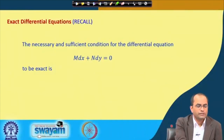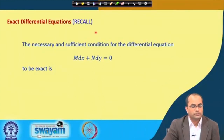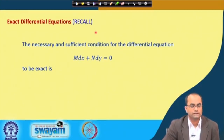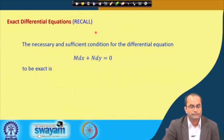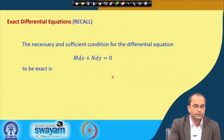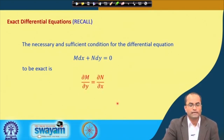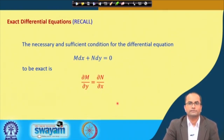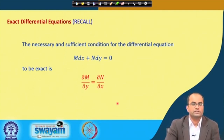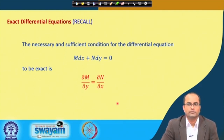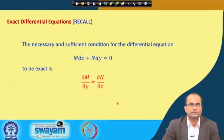Just to recall, we have the necessary and sufficient conditions for exactness. The necessary and sufficient condition for the differential equation M dx plus N dy equals 0 to be exact is: del M over del y equal to del N over del x. This is necessary and sufficient, meaning if this condition holds the equation must be exact, and if the equation is exact this condition must hold.